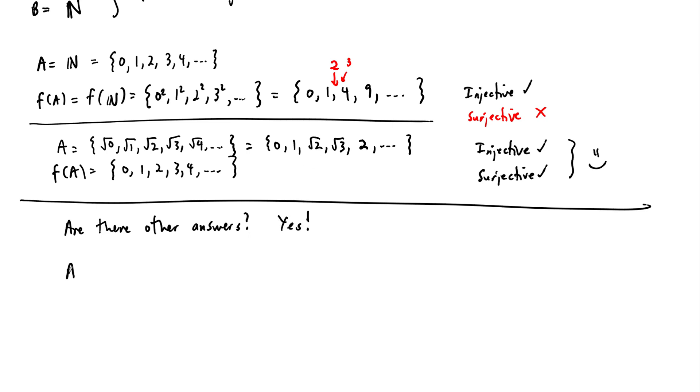And another answer, we'll call this A prime for example, could just be all the negatives. We could have all the same numbers but negative. So {0, -1, -√2, -√3, ...}. That's an acceptable answer.